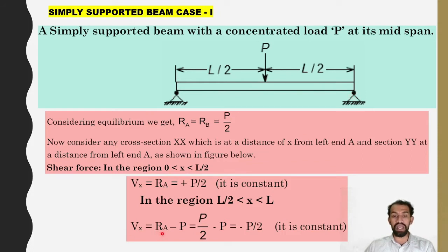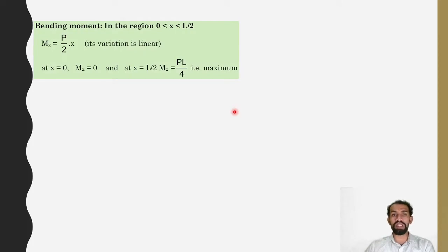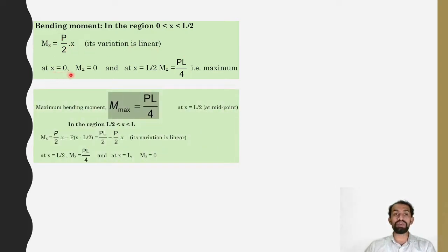Vx will be Ra minus P. Moving from the left side, reaction Ra is going upwards and P is coming downwards. Ra is P by 2 and P is coming downwards, so P by 2 minus P gives minus P by 2, a negative sign. It is constant because there are no loads from end point to center point — only one point load at the center. Considering bending moment in the region 0 to L by 2: M at any distance x equals P by 2 into x, which is Ra into x, and its variation is linear.